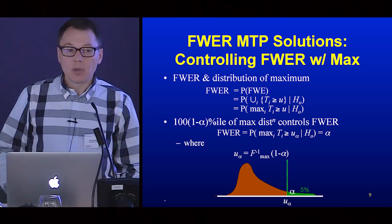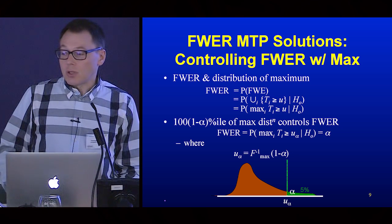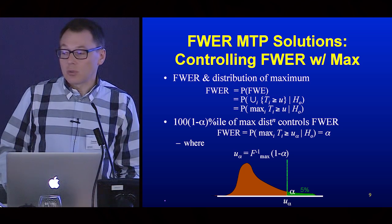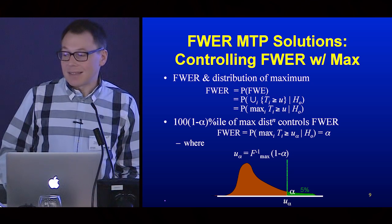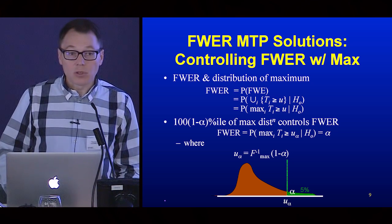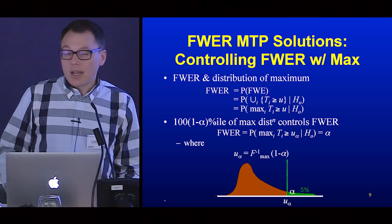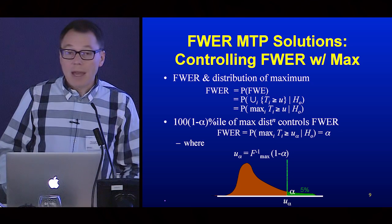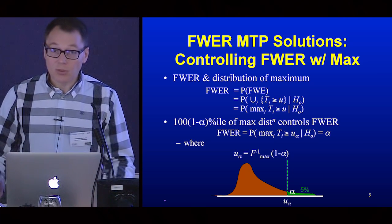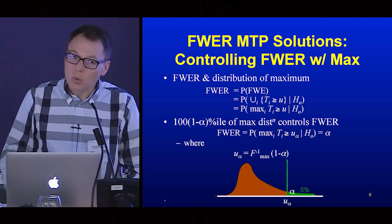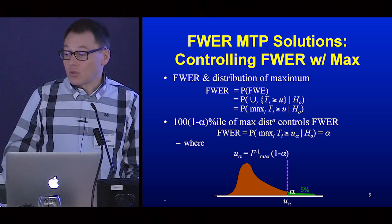That event — one or more test statistics above threshold U — is exactly the same as the largest test statistic falling above U. So to get a grasp on the family-wise error rate, you need to understand the maximum distribution. For independent random variables this is an easy exercise, but we have correlated voxels, so this is not trivial. But if we could get our hands on the distribution, we just need the 95th percentile of the maximum distribution. Any tests that fall above that threshold, we can reject the null hypothesis, knowing we're controlling the risk of one or more false positives at 5%.